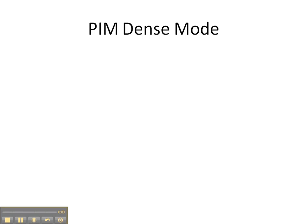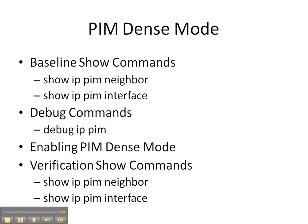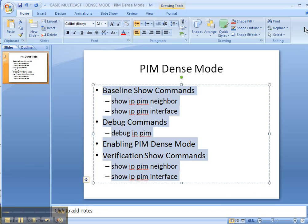In this video cheat sheet, I'm going to be showing you how to deploy PIM dense mode throughout your entire network. We're going to start off with the baseline show commands — show IP PIM neighbor and interface — to ensure that PIM is not already running. Then we're going to enable the debug IP PIM command on one router, enable PIM dense mode across the network, and finish up with verification show commands on all routers before moving on to the next video cheat sheet where we test our dense mode network.